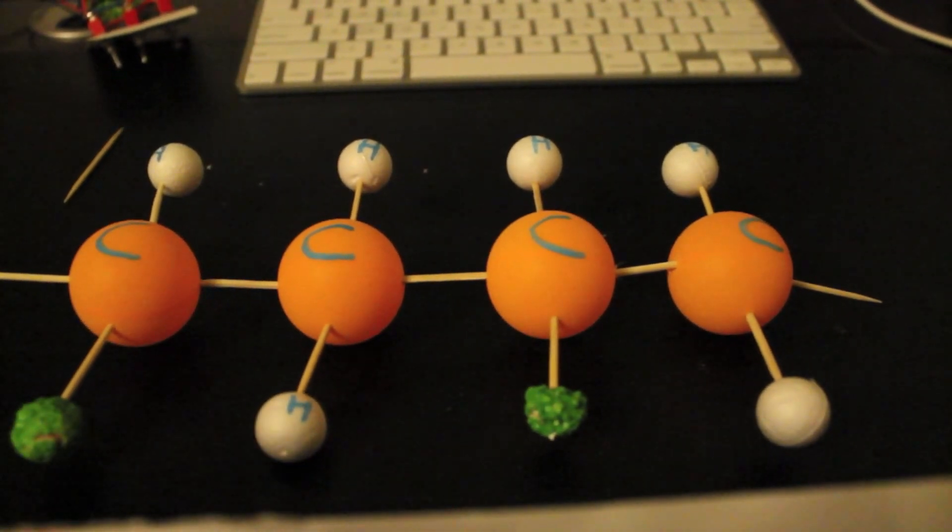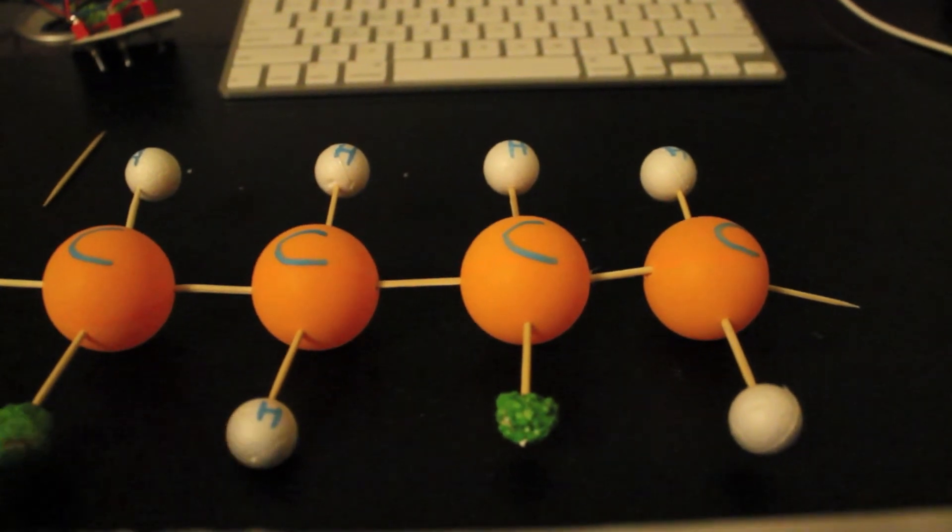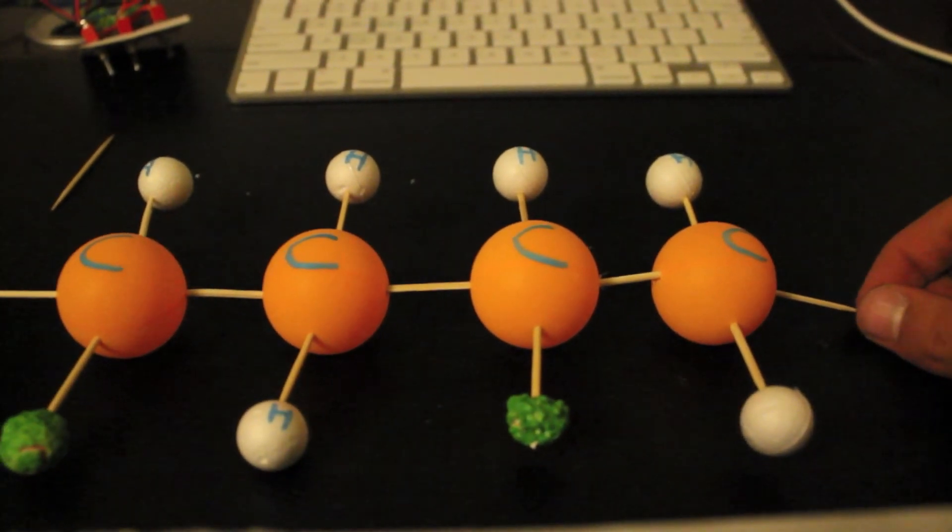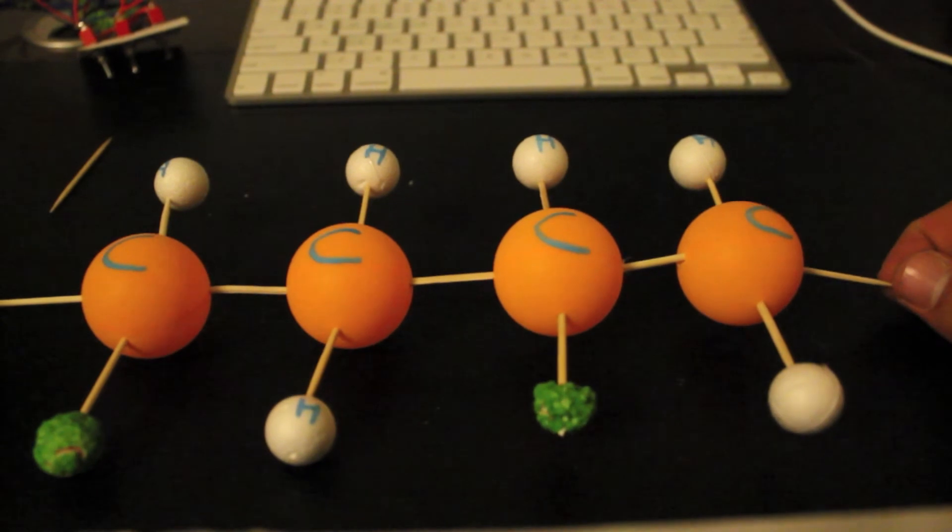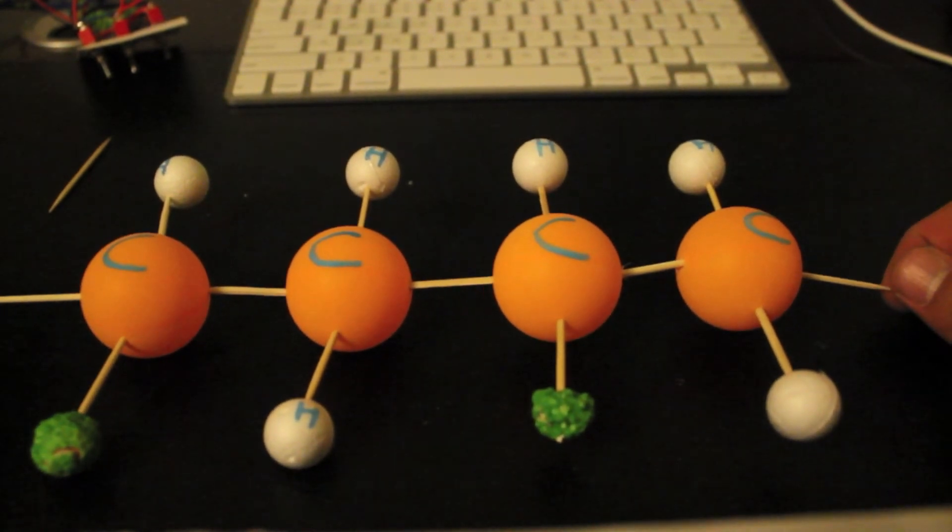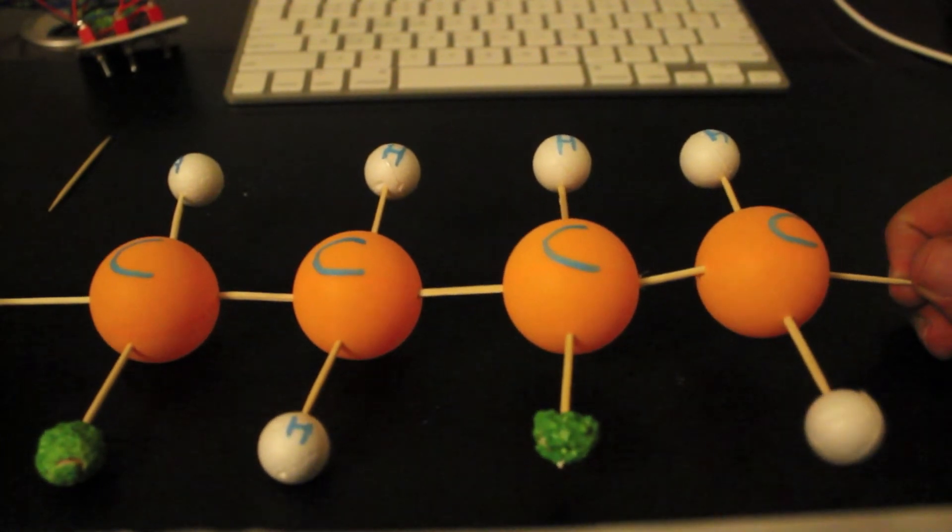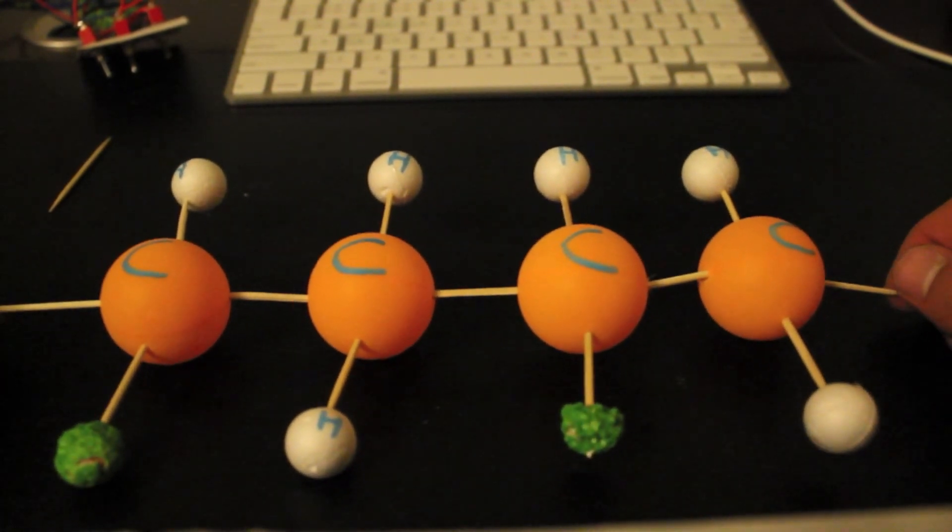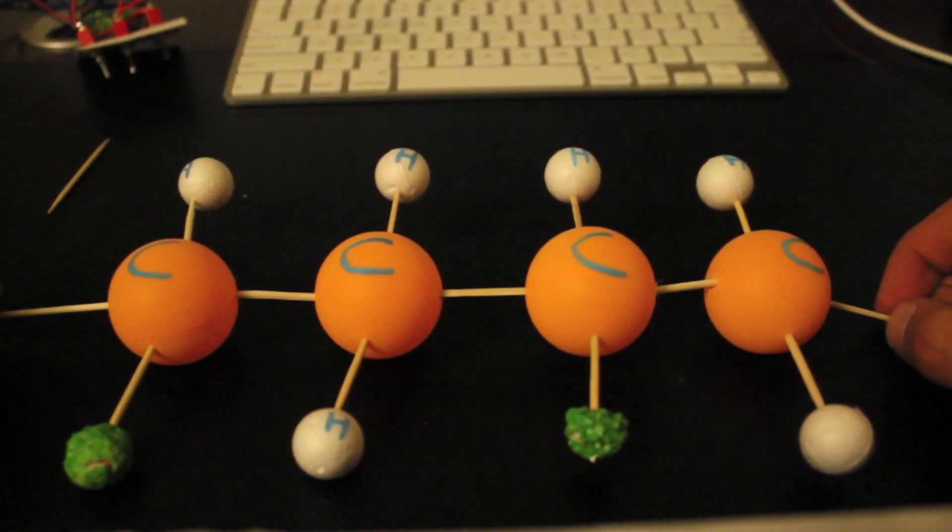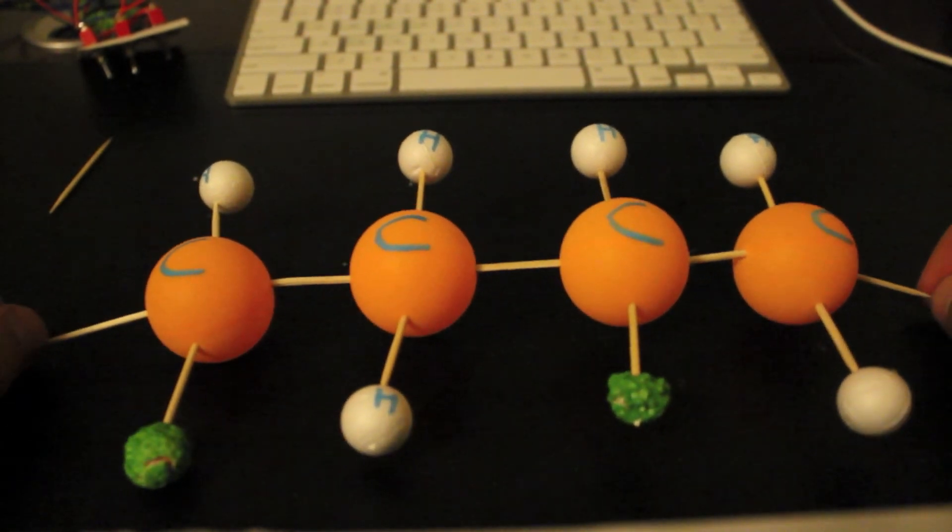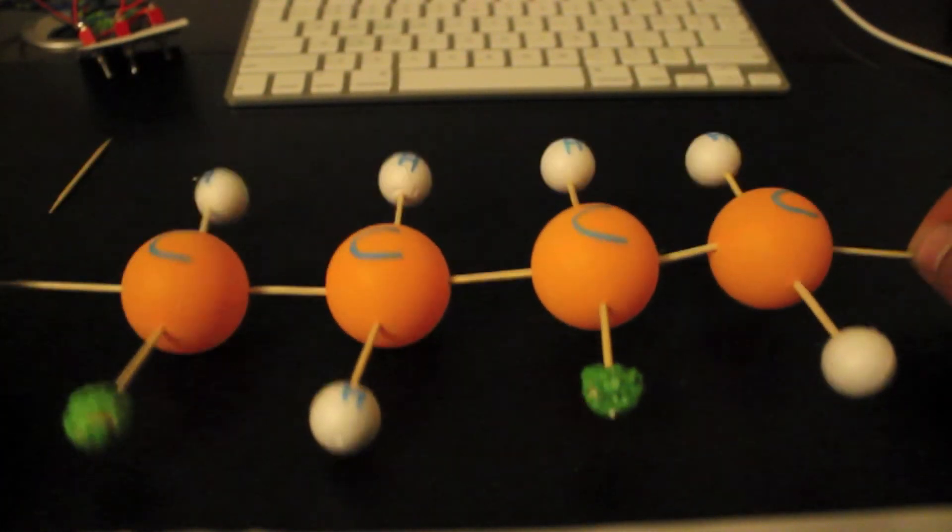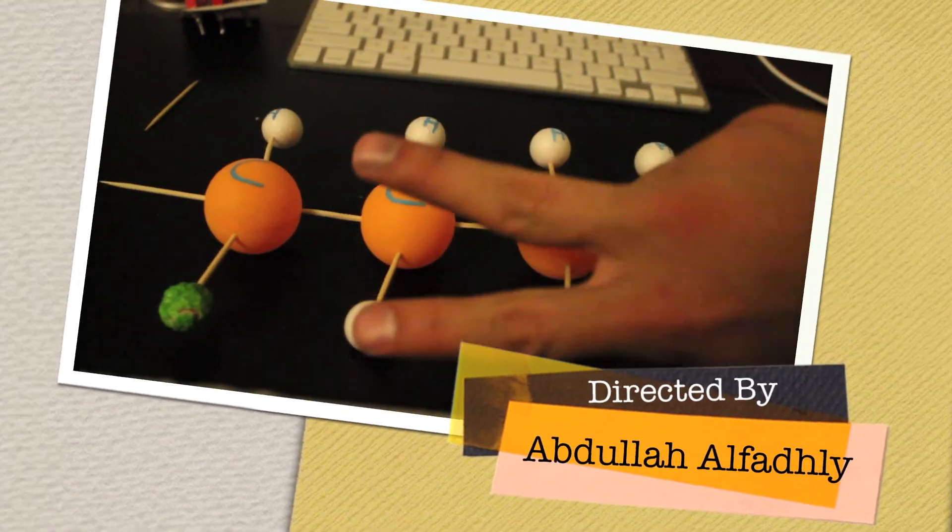And the final stage is called termination, and this is when the chain growth stops. And this is achieved by lowering the pressures and temperature of the actual reaction chamber, or by not adding any more ethene to the reaction. And that's it. Thank you for bearing through my presentation. I'll see you in the next one. Bye.